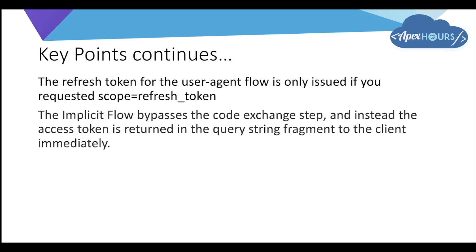In web server flow, you first hit the authorization endpoint to get the authorization code, then hit the token endpoint to get the access token. But in implicit flow, you make just one request and directly get the access token — there is no intermediate step of retrieving the authorization code.